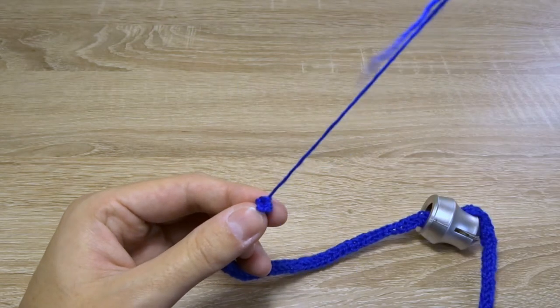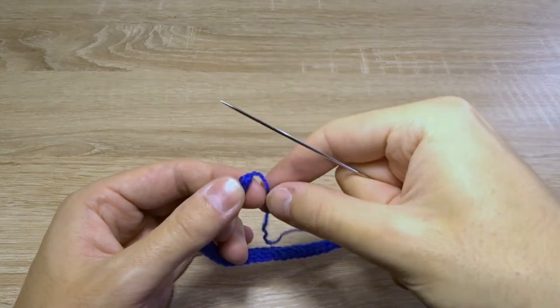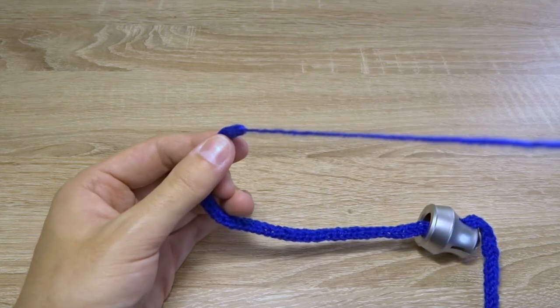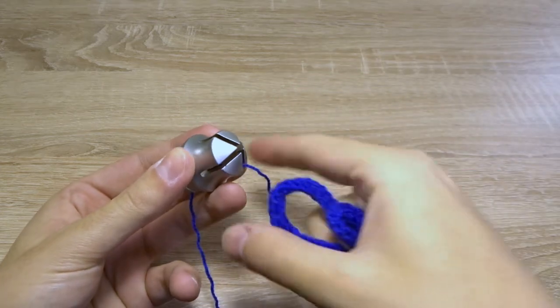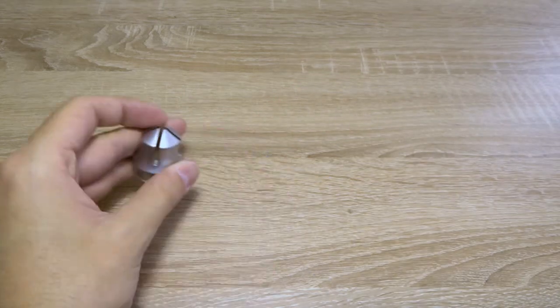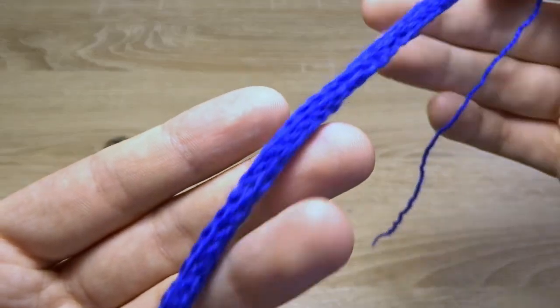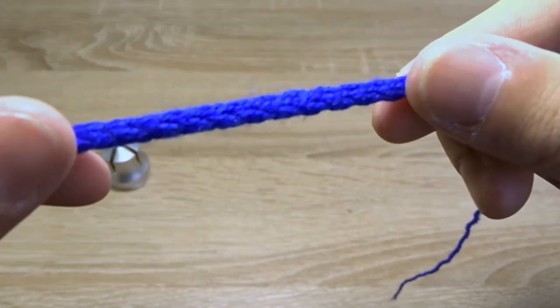Then pull the yarn and cut off the tail. This is my first cord on this mill. I am very satisfied with the result.